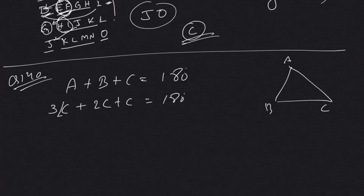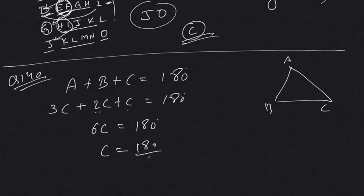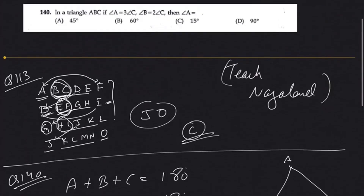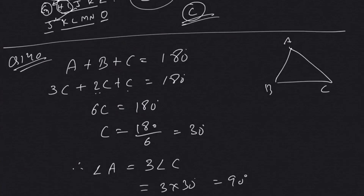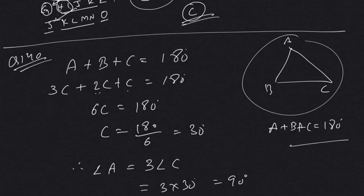Adding all angles: angle A + angle B + angle C = 3C + 2C + C = 6C = 180 degrees. So C = 180 ÷ 6 = 30 degrees. Angle A is three times angle C, so angle A = 3 × 30 = 90 degrees. A very simple question based on just one theorem: the sum of angles in a triangle equals 180 degrees.